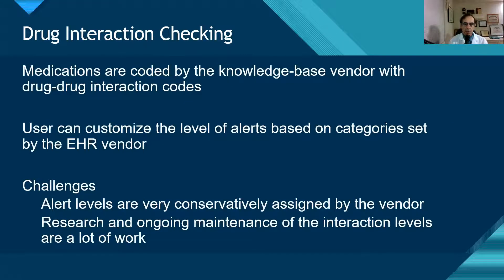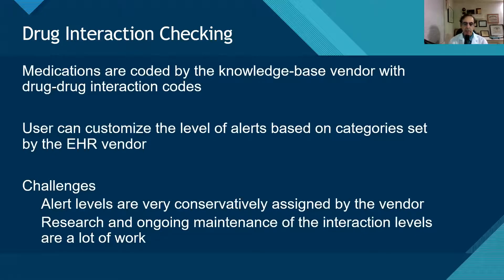Drug interaction checking: medications are coded again by the knowledge base vendor, and we can customize levels of alerts. Drug-drug interactions can have drugs that are contraindicated and must be avoided, and others where you can modify the dose or pick an alternate medication to avoid the serious interaction. Alert levels are very conservatively assigned by vendors because they want to cover all their bases, but this results in over-alerting. Research and ongoing maintenance of interaction levels are a lot of work if you want to customize your system and minimize unnecessary alerts.